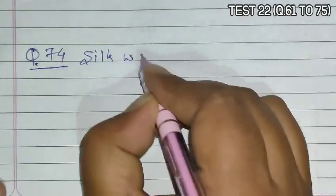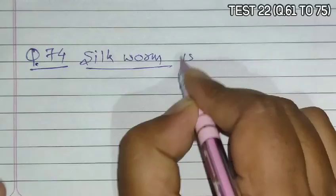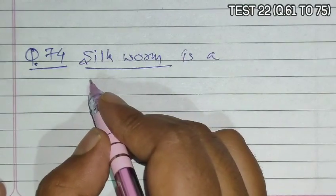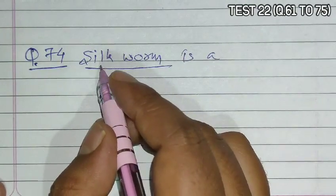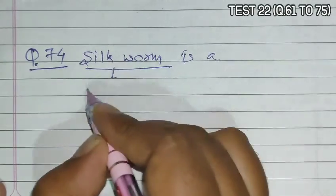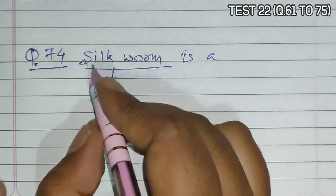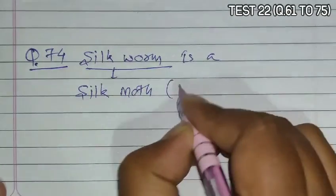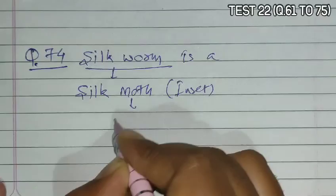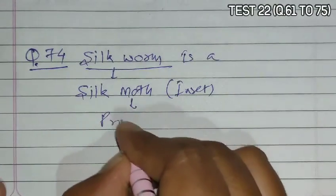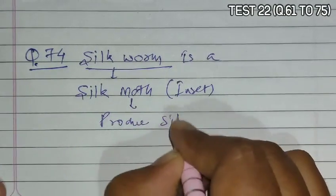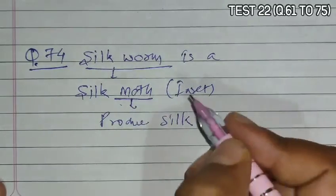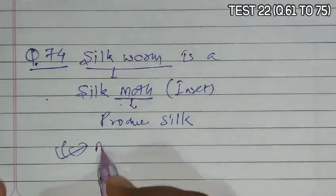Question 74 asks that silkworm is a. Silkworm is an insect — specifically a silk moth — that produces silk. So it is a moth, and C is the correct answer.